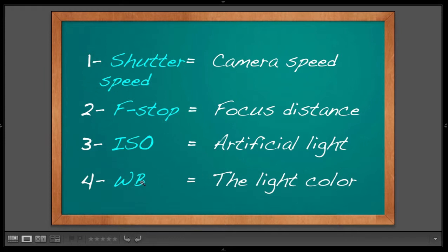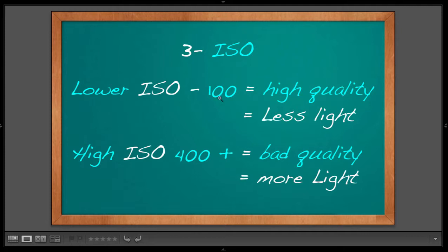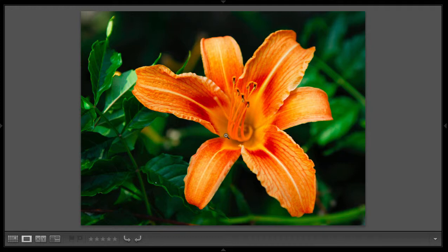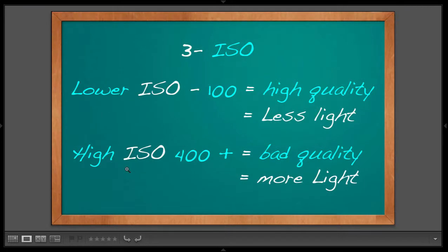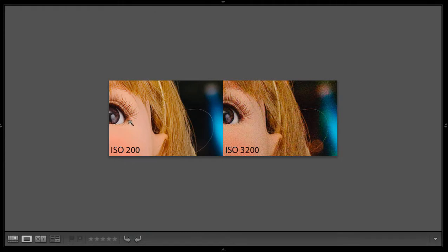To summarize: set white balance to cloudy and forget about it. Set ISO to minimum — which should be 100 or less on today's cameras. A smaller ISO value gives you higher quality but less light. If you want very nice, clean, crisp photos, shoot at ISO 100. On the other hand, a high ISO value means more light but bad quality. Up to about 800 it can still be used without losing too much quality depending on your camera. At 3200 it looks very bad.